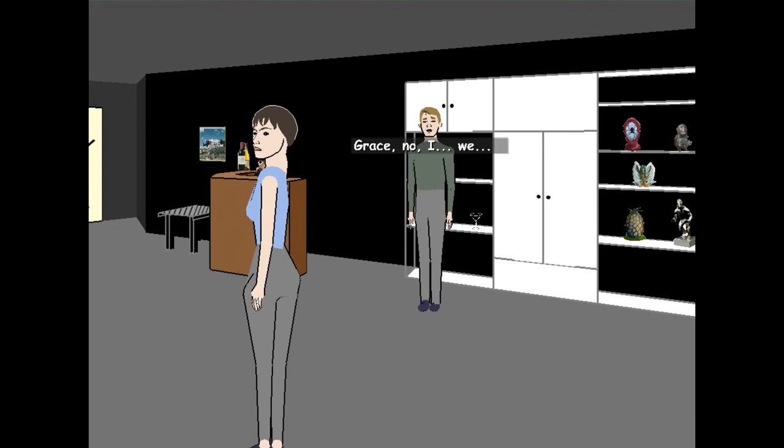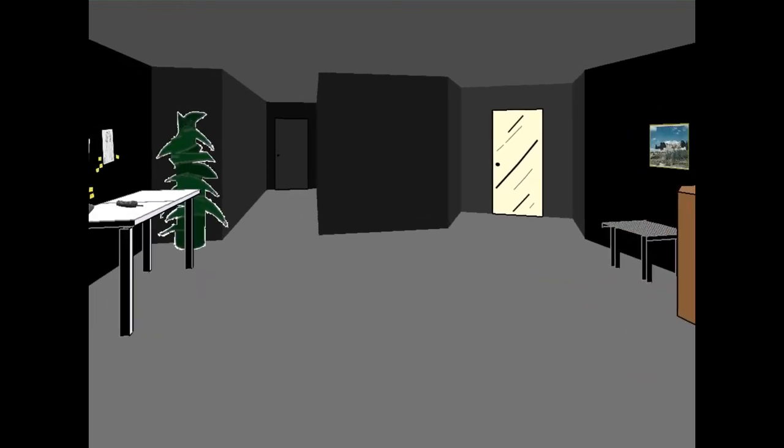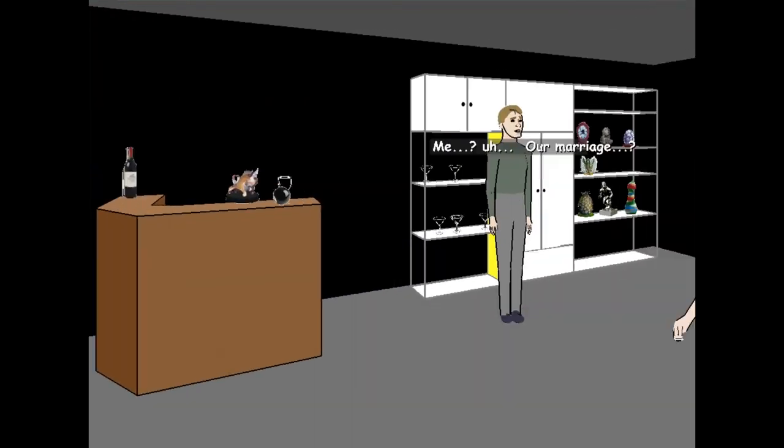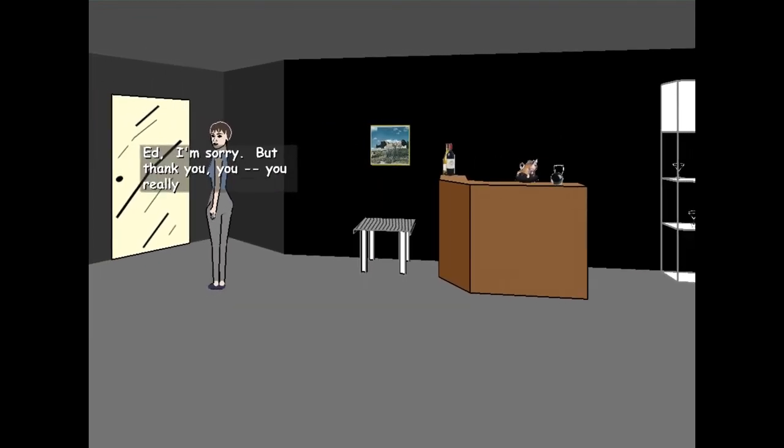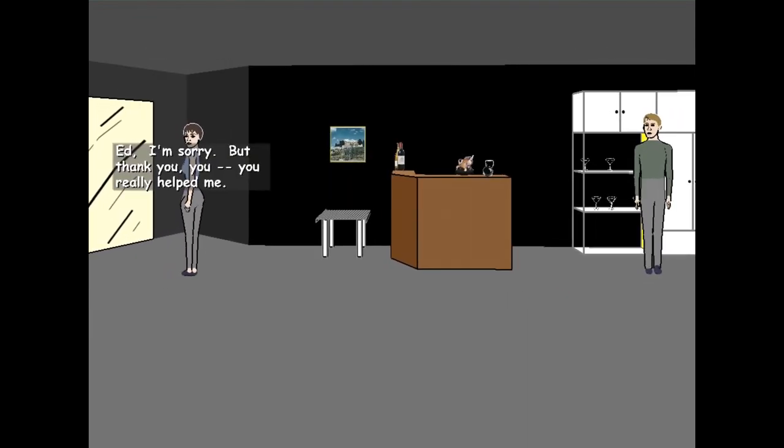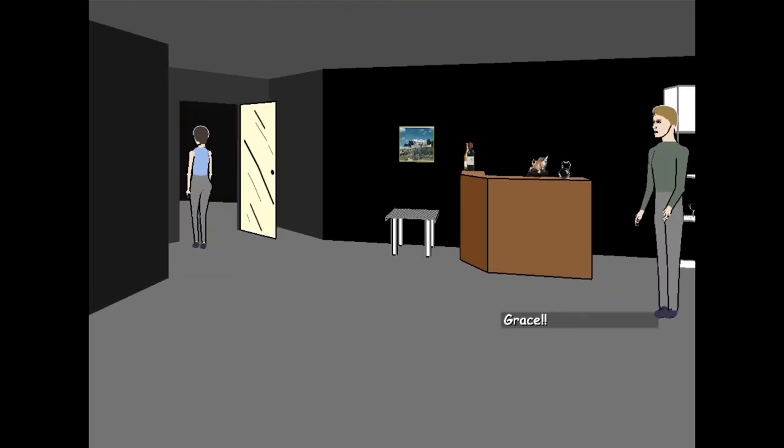Grace, no. I... We... No, Tripp. This is about me. I see now it's not about you or about our marriage. Me? Our marriage? Hey, no. Wait! Ed, I'm sorry. But thank you. You really helped me. Grace? Grace!